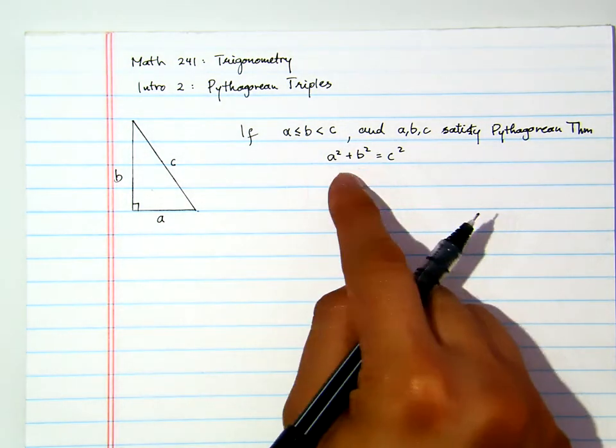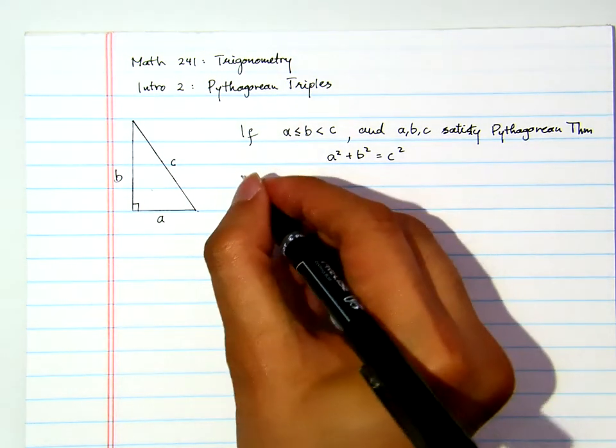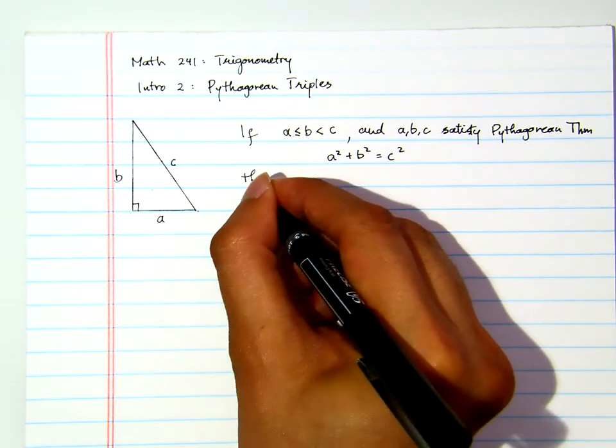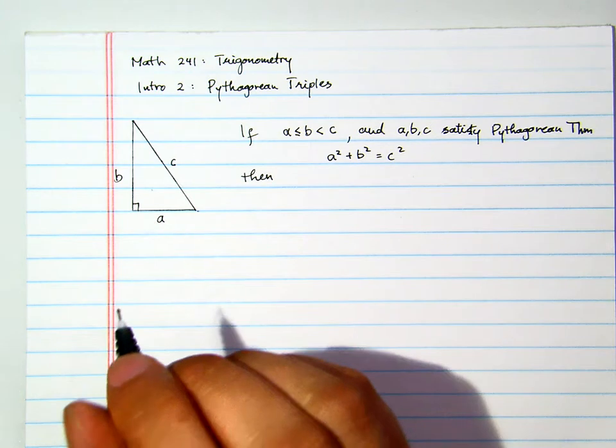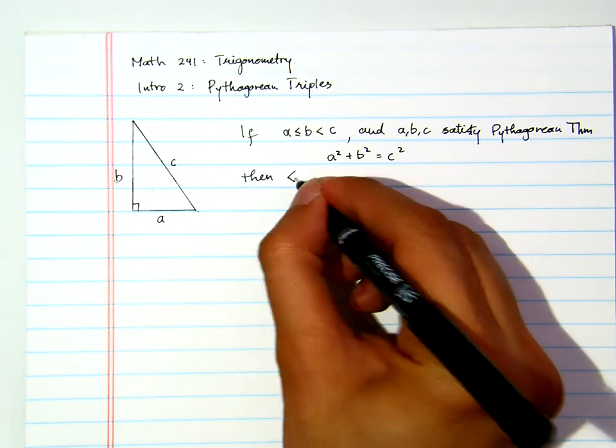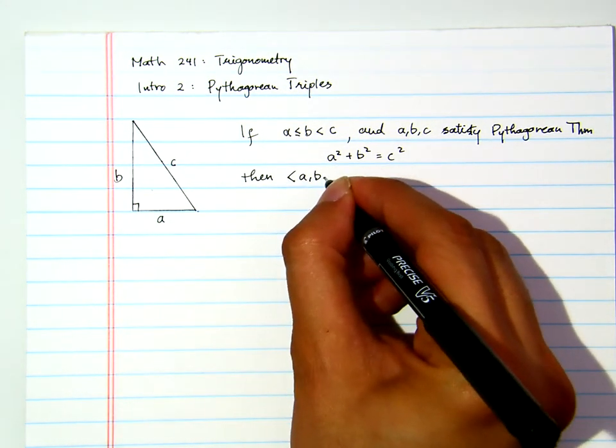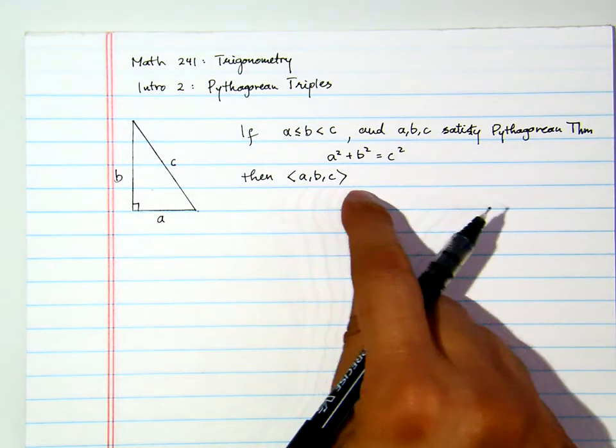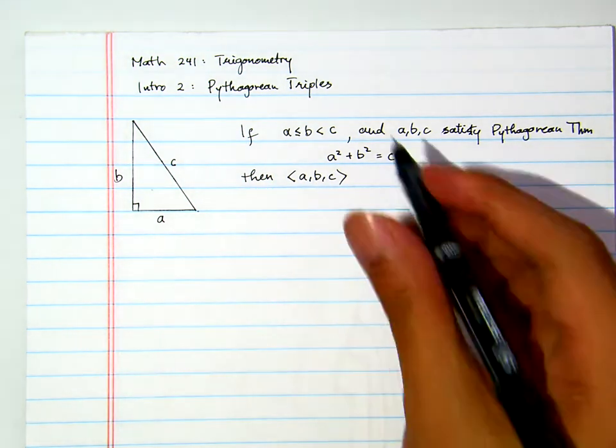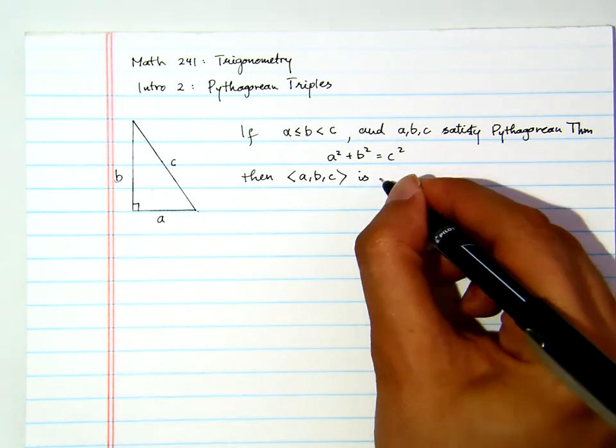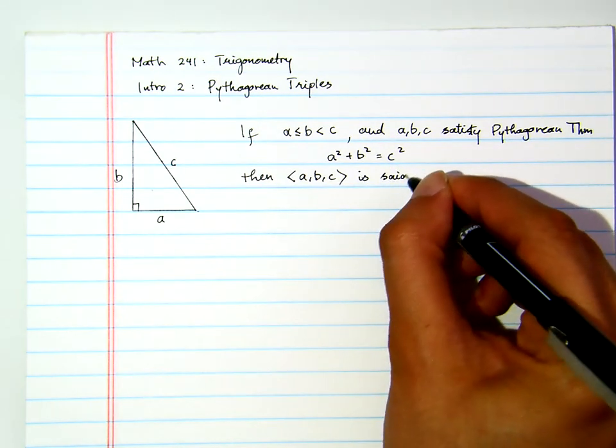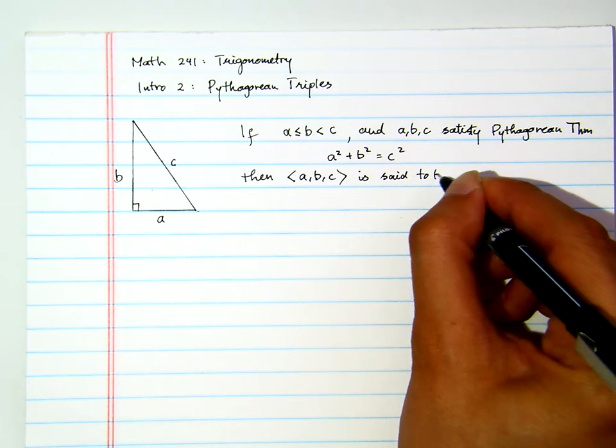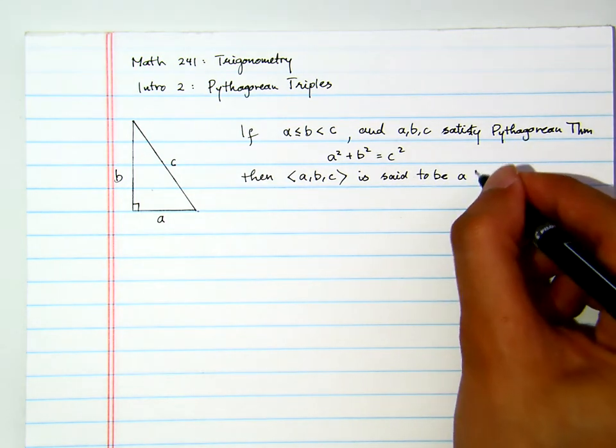Now, suppose this A, B, C satisfies this Pythagorean Theorem, then we introduce to you a triple. I use this notation here. We call that the angle bracket A, B, C. This is said to be a Pythagorean Triple.